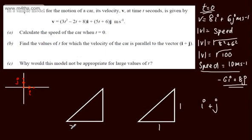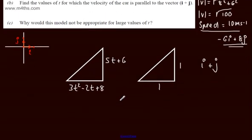Consider that this is going to be parallel to this vector. So the i component will be 3t squared minus 2t plus 8, and the j component will be 5t plus 6. When we look at similar triangles, we can say...